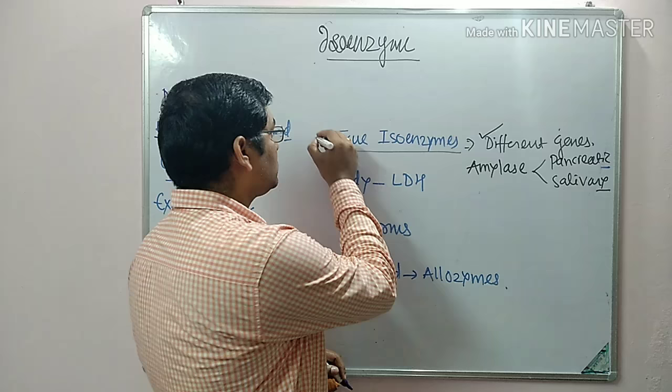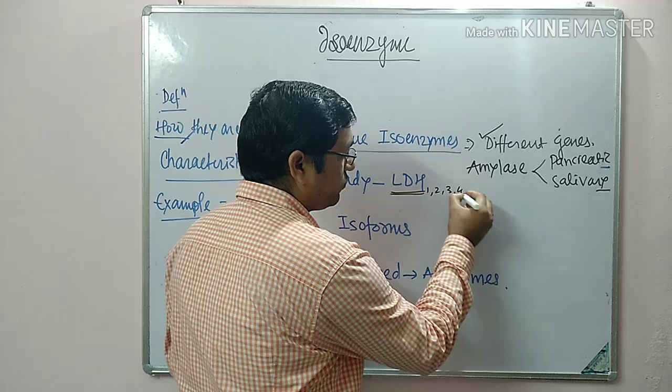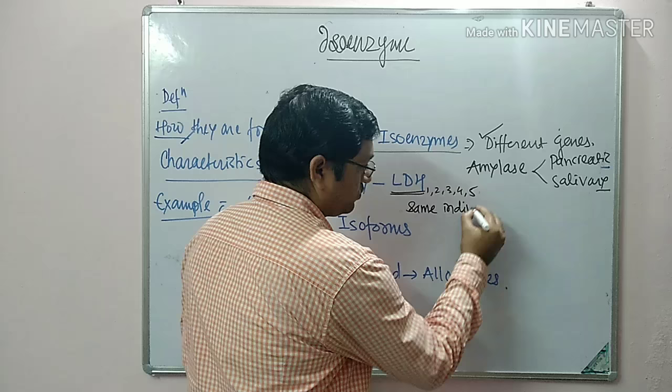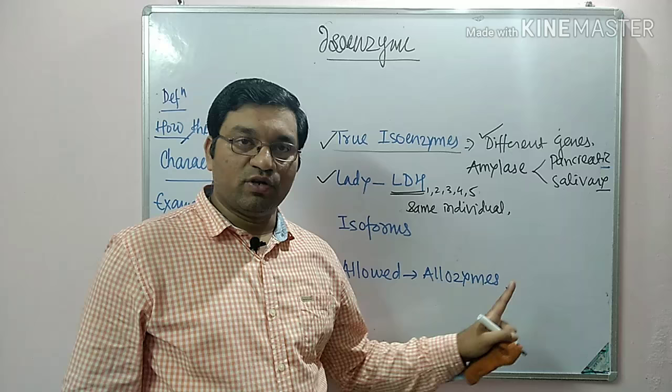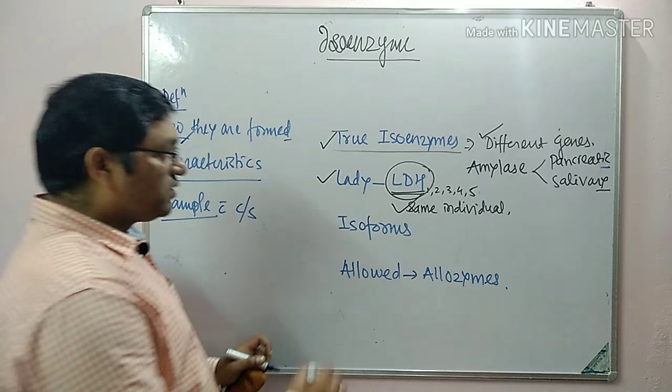The second is lactate dehydrogenase isoforms. There are five isoenzymes of lactate dehydrogenase — LDH1, 2, 3, 4, and 5. All variants are present in the same individual and are present in all individuals of the population.